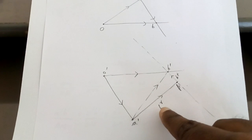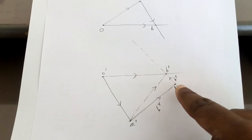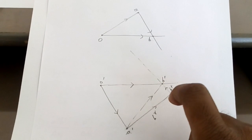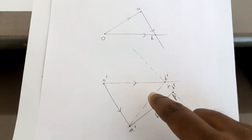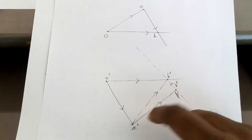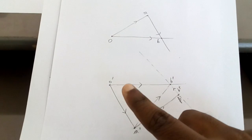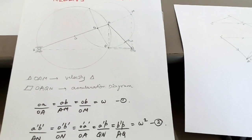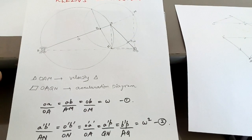A'P corresponds to the radial acceleration of point B with respect to A, and B'P corresponds to the tangential acceleration of point B with respect to A. O'B' is the acceleration of the slider with respect to fixed point O, A'B' is the total acceleration of point B with respect to A, and O'A' is the radial acceleration of point A with respect to O. Using these two similar triangle concepts you can easily solve any slider crank mechanism question involving velocity or acceleration.